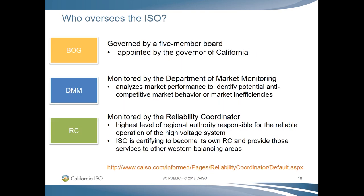We are governed by a five-member board whose members are appointed by the Governor of California, serving staggered three-year terms. Our independent internal Department of Market Monitoring analyzes market trends and works with FERC enforcement to identify potential anti-competitive market behavior or market inefficiencies. They also review ISO market design initiatives to ensure the market remains competitive and produce regular reports available on our website. A reliability coordinator has the highest level of authority for the reliable operation of the high-voltage system and has the authority to prevent or mitigate emergency conditions beyond the operational awareness of the ISO and individual transmission operators.